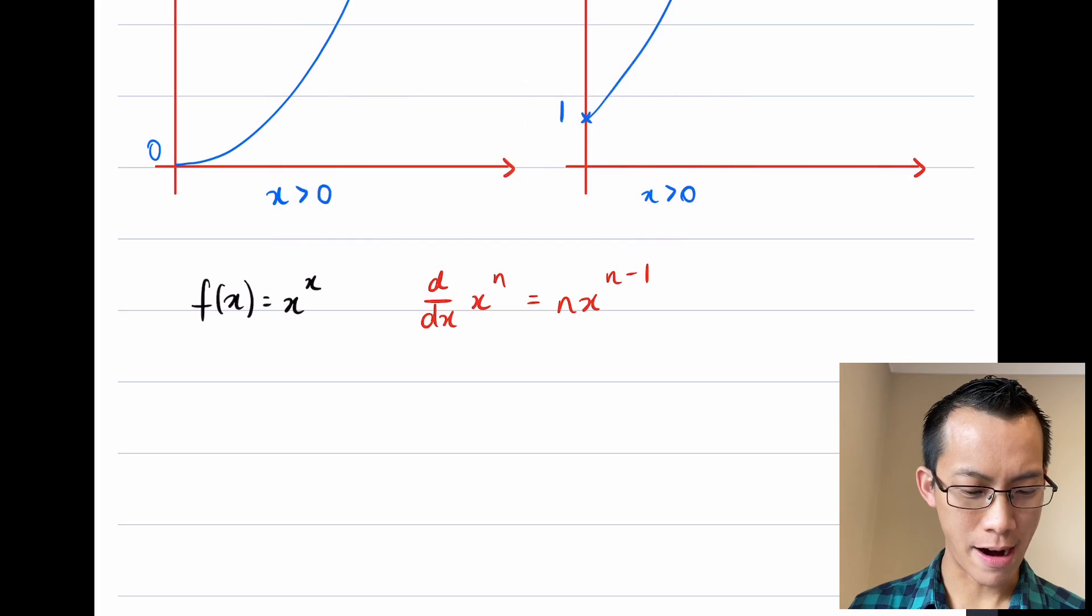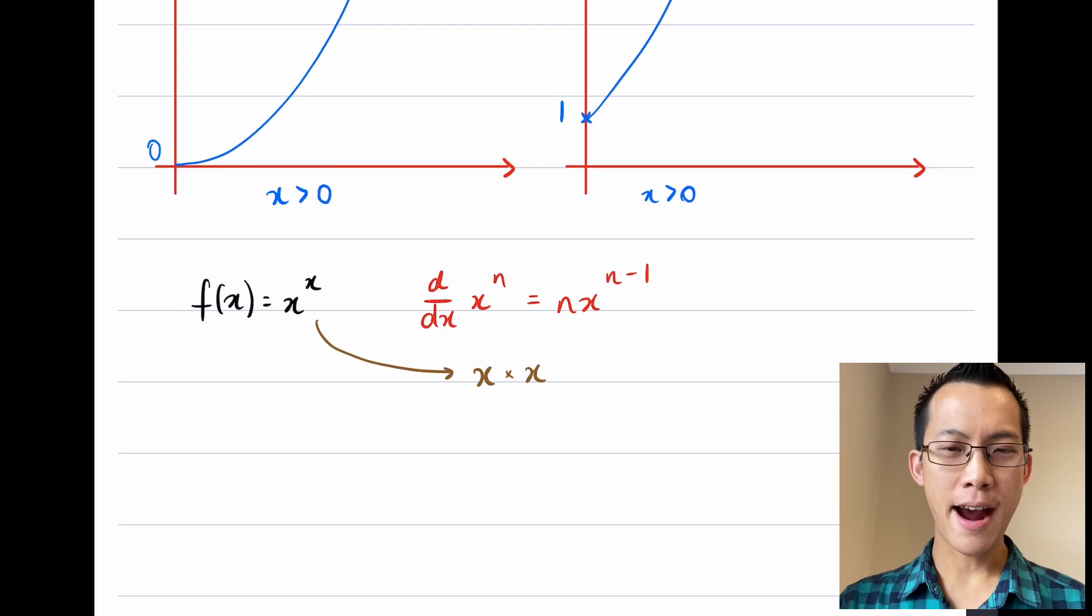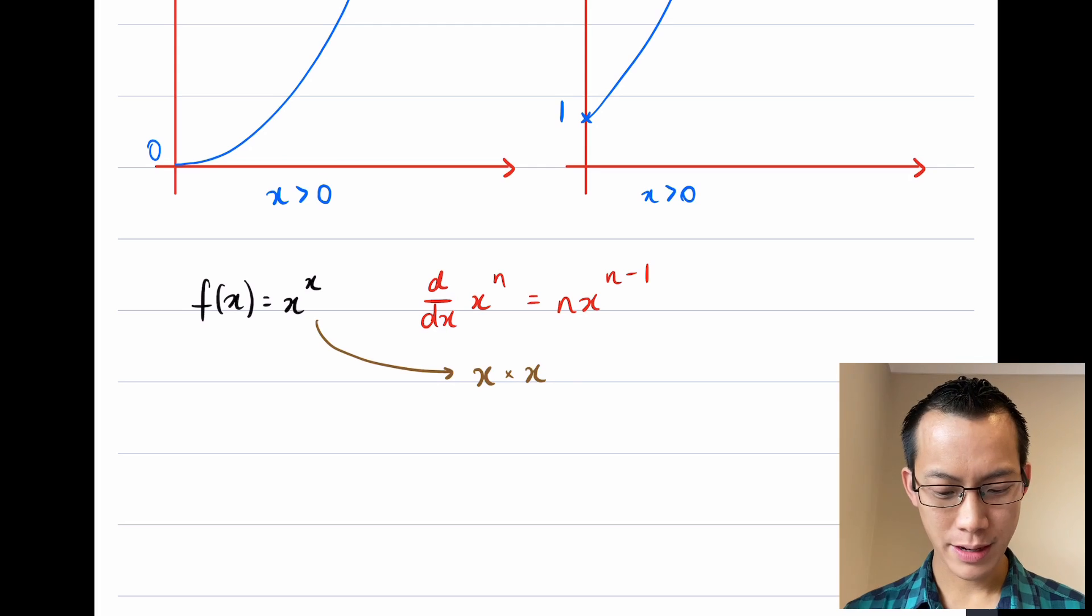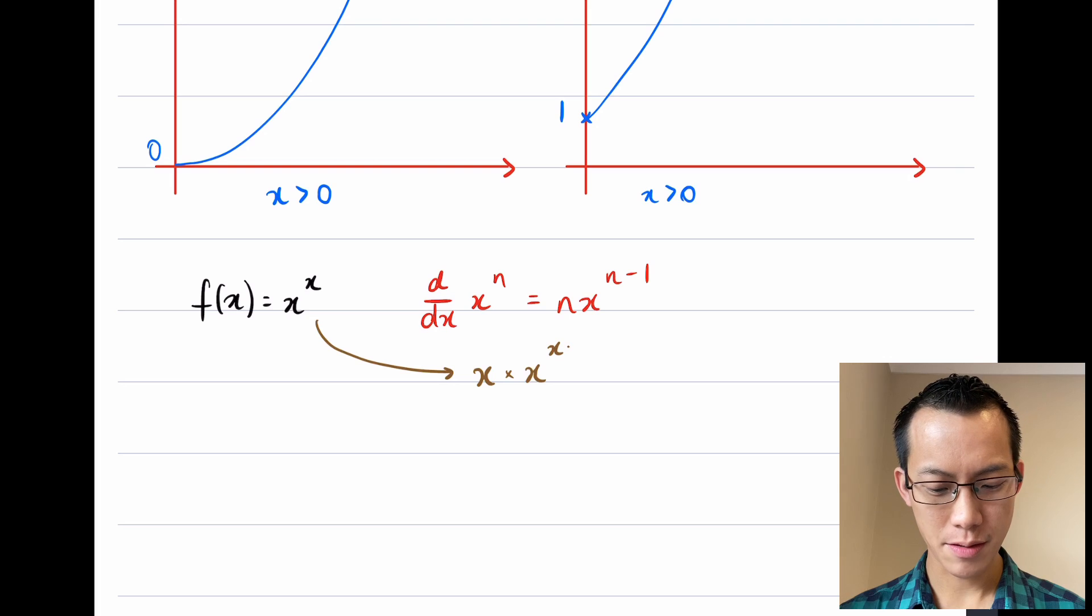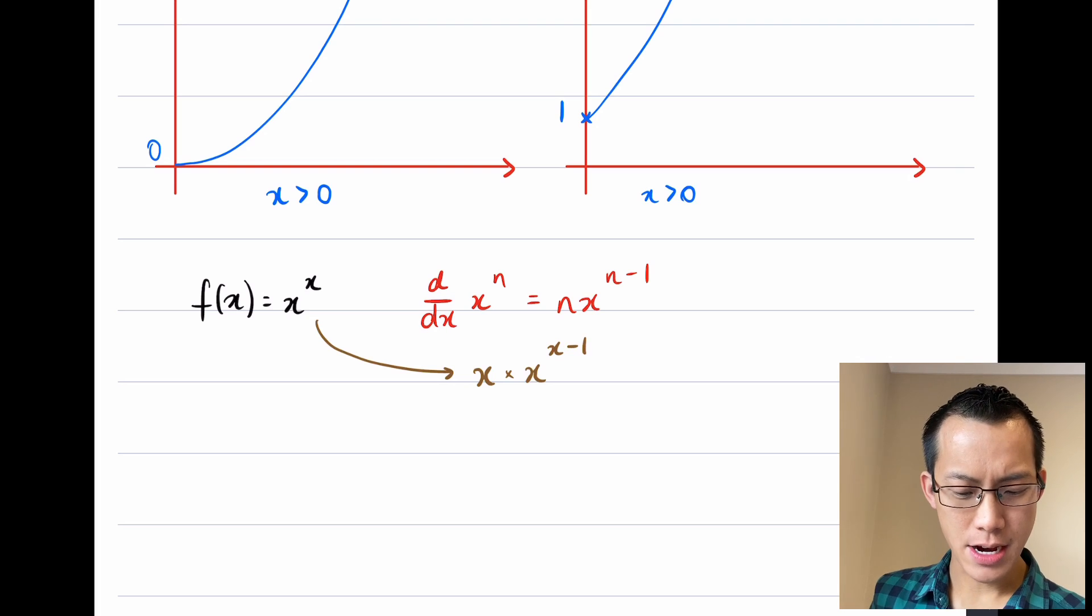If I differentiate x^x and try and bring this down, let's see if this actually works out and gives us a reasonable result. The first thing is I'm going to multiply by the index, which in this case is x, and then I'm multiplying that by x to the power of—and then I reduce the index by 1—so I get x minus 1 here.